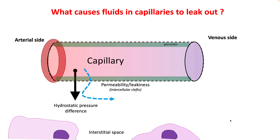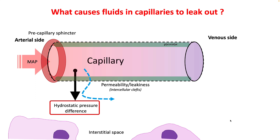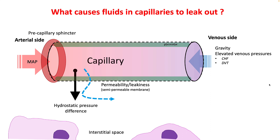The amount of fluid that would leak out depends upon the hydrostatic pressure difference between capillaries and the interstitial space. This pressure is generated by your mean arterial pressure. However, we have a pre-capillary sphincter at the beginning that regulates the capillary pressure. On the venous side, this system is unregulated, so we commonly see most reasons for edema formation as a problem with the venous side.